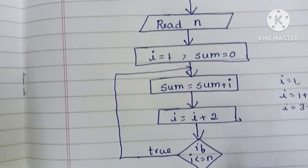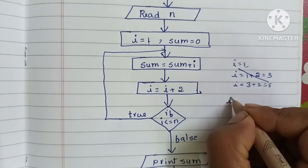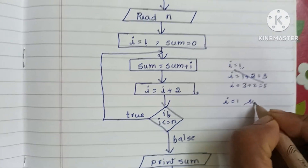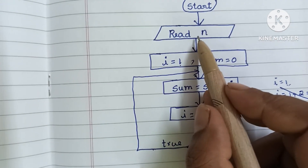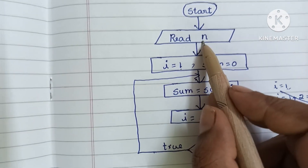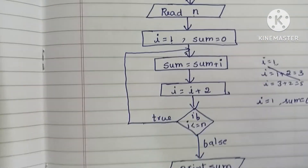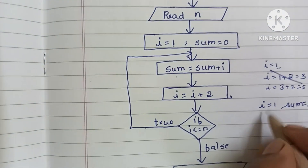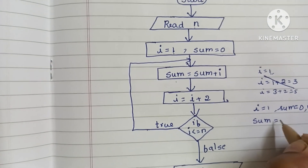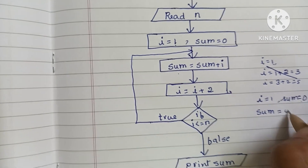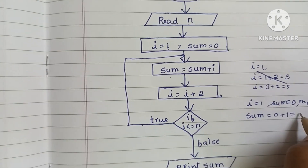Let's trace through an example. Initially i = 1 and sum = 0. Consider N = 6. Initially sum = sum + i: sum = 0 + 1, so sum becomes 1.